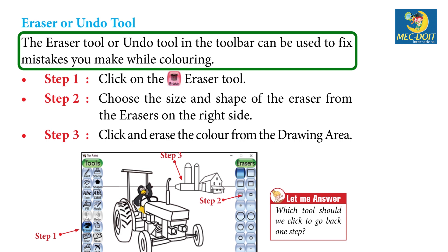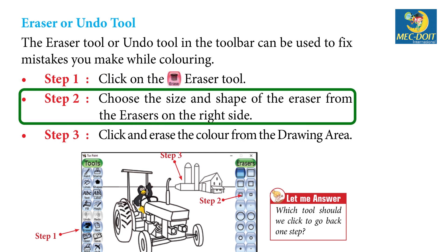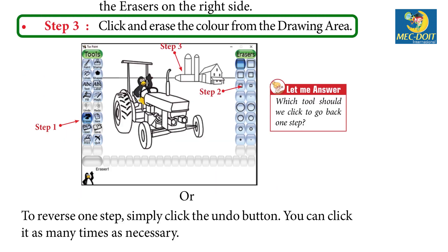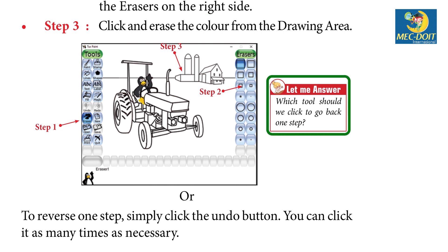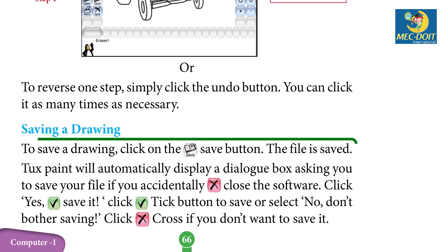Eraser or undo tool. The eraser tool or undo tool in the toolbar can be used to fix mistakes you make while coloring. Step 1: Click on the eraser tool. Step 2: Choose the size and shape of the eraser from the erasers on the right side. Step 3: Click and erase the color from the drawing area. To reverse one step, simply click the undo button — you can click it as many times as necessary.